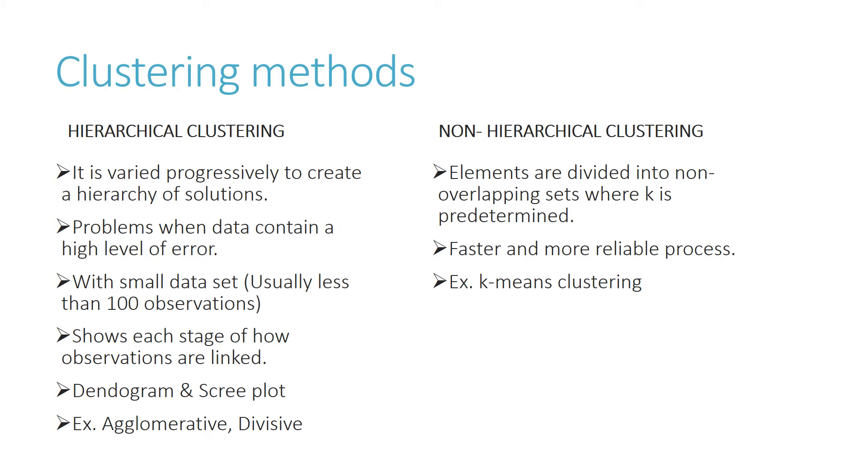Non-hierarchical clustering is a faster and more reliable process and doesn't have problems when data contains a high level of error and can even work on large data sets. Hence, non-hierarchical clustering is usually used in the researches. Dendrogram and scree plot help in hierarchical clusters. Major examples are agglomerative and divisive, whereas examples of non-hierarchical clustering is k-means clustering.